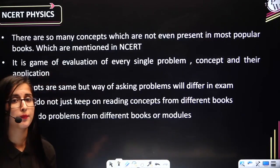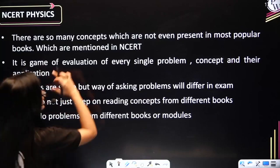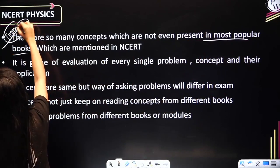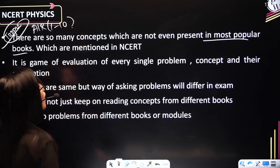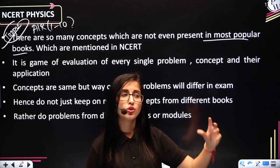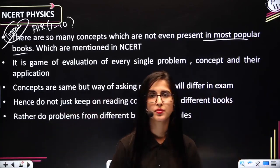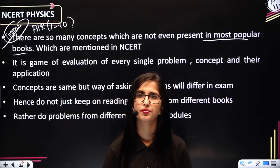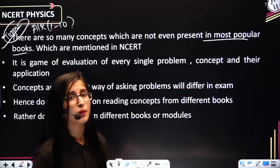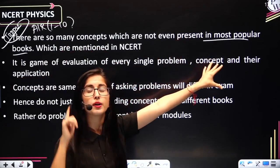Next, for physics: there are so many concepts which are not even present in most popular books but are present in NCRT. This is what toppers — those who get AIR 1, 2, or top 10 — have mentioned. NCRT physics contains concepts that you will not find in normal books. One concept might be in one book, but another concept may not be in another book. So rather than jumping across books, first read NCRT properly, clear those concepts, and then you can jump on to other books.